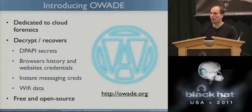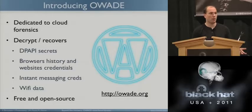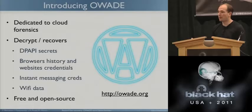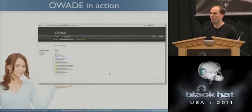I'm going to walk you through every step needed to do that. We have also written a tool called OWADE — Offline Windows Analysis and Data Extraction Tool. It's open source, written in Python, and works on Linux. The tool is able to decrypt DPAPI secrets using OpenSSL. It can recover browser history and credentials for all major browsers, recover instant messaging credentials such as Skype, and also recover Wi-Fi data such as WPA keys from the hard drive.